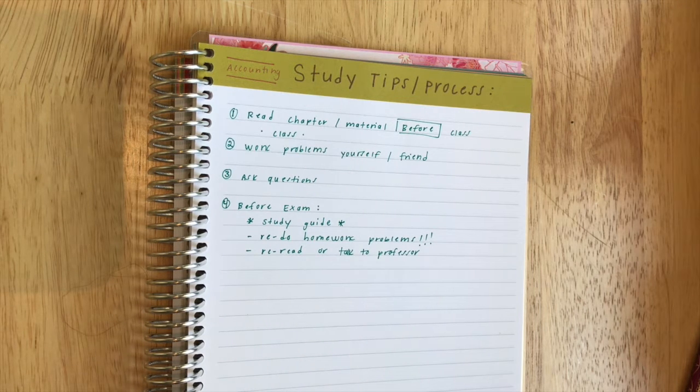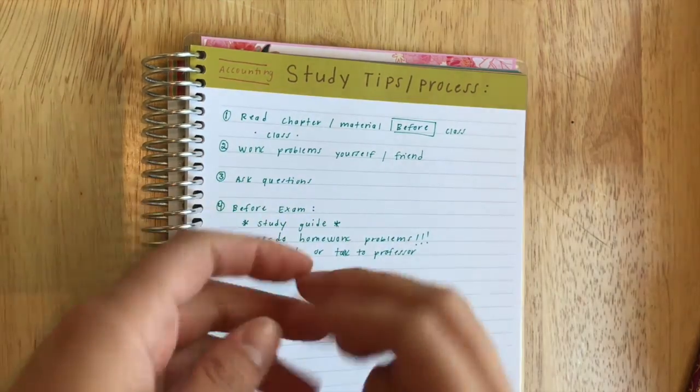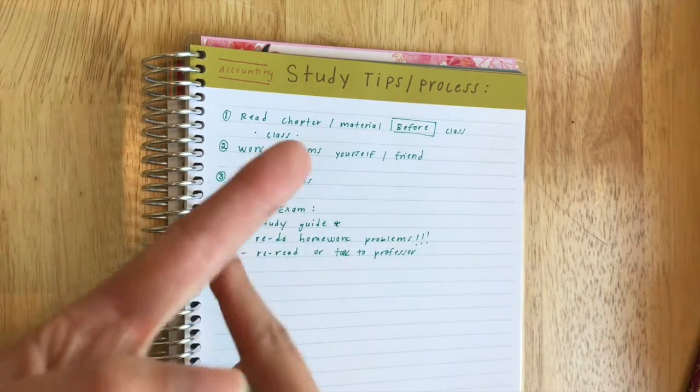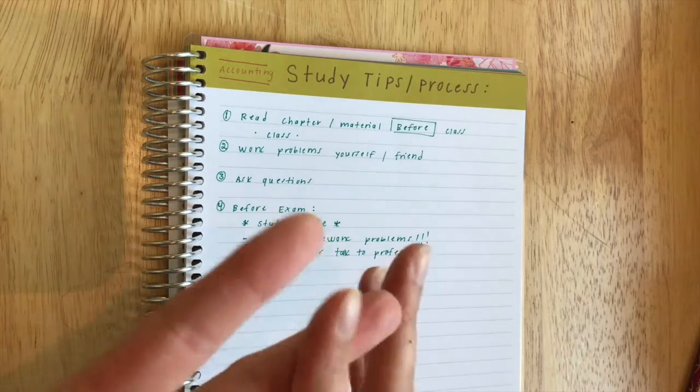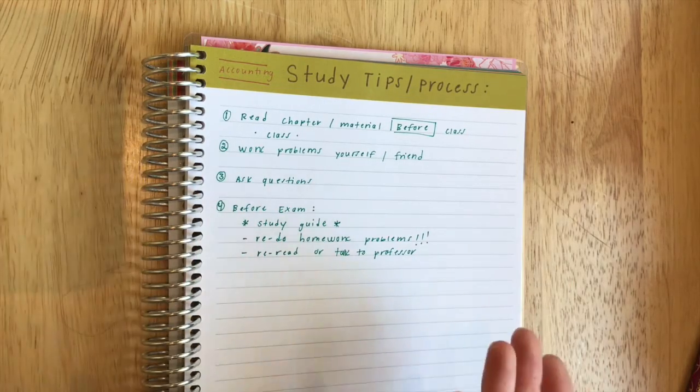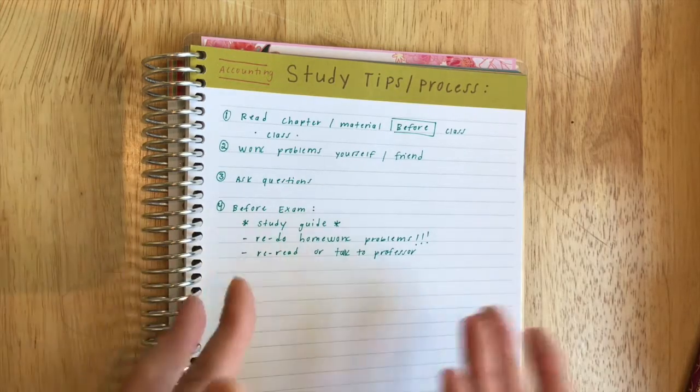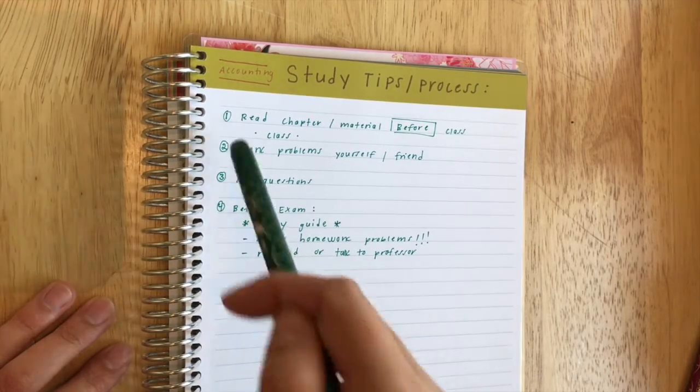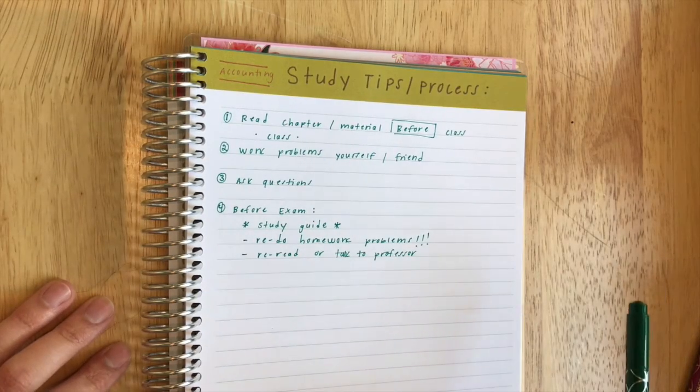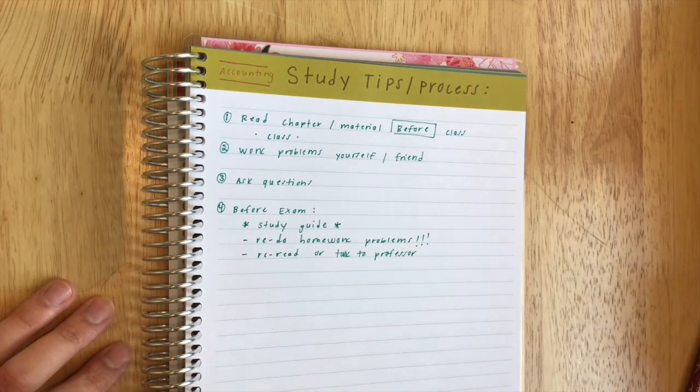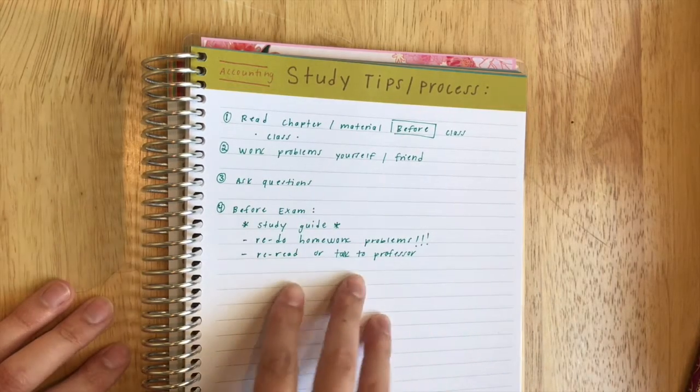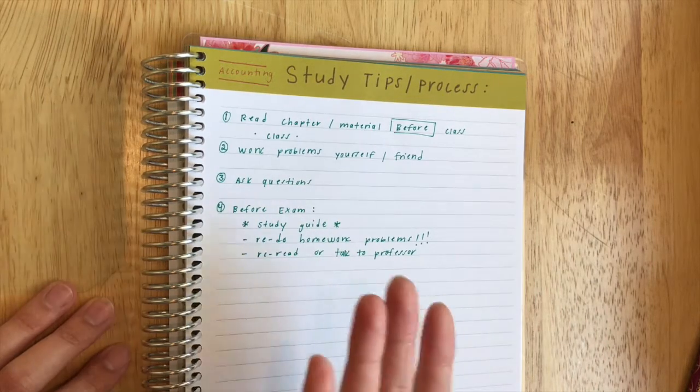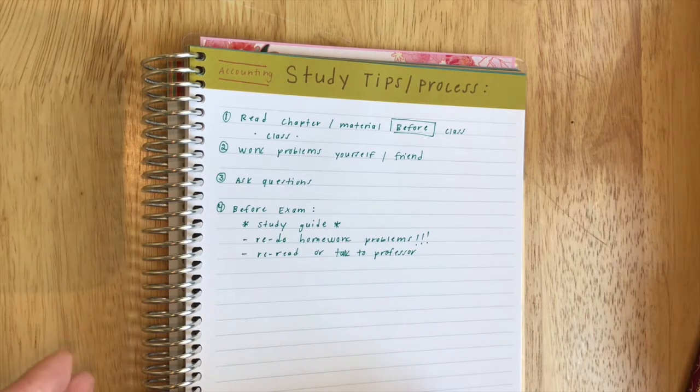So those are really my four tips or my process I would say. This is what I've done again through my accounting bachelor's degree and through certifications. Currently as an MBA we don't have a lot of tests, a lot of our stuff is like presentations or projects, so I don't have to use this quite as much. But still, if I was going to do a test today this is exactly what I would follow. So I hope that helped you guys, I hope that answered your questions. I know a couple people have asked me for study tips for accounting and these are really what I've done.